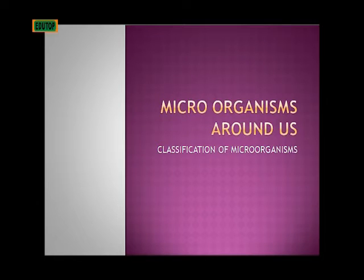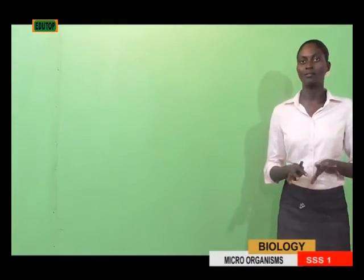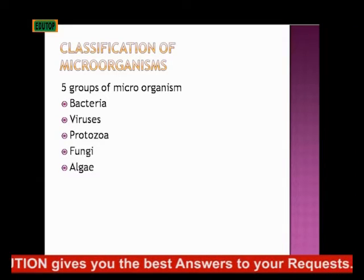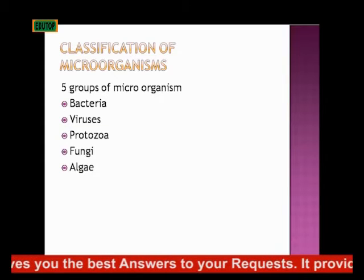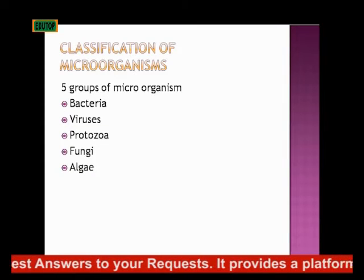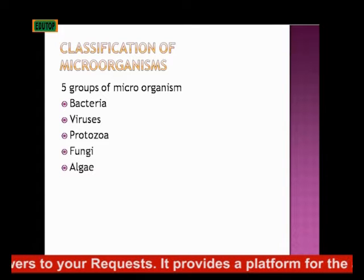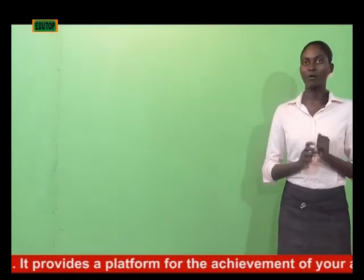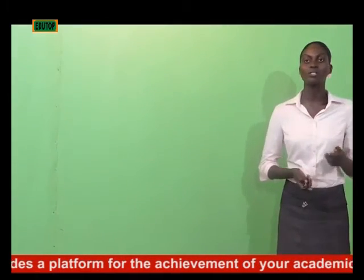Now we'll be looking at microorganisms around us — their benefits, their harmful effects, their various types, and everything about microorganisms. First, we'll be talking about the classification of microorganisms. There are five groups of microorganisms: bacteria, viruses, protozoa, fungi, and algae.